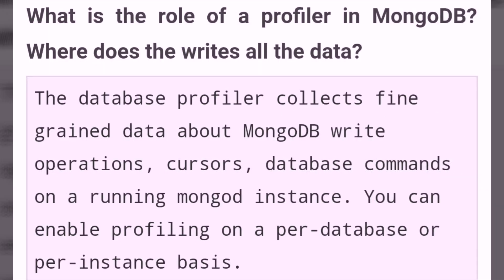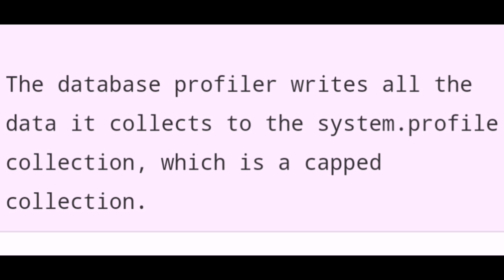What is the role of a profiler in MongoDB, and where does it write all the data? The database profiler collects fine-grained data about MongoDB write operations, cursors, and database commands on a running MongoDB instance. You can enable profiling on a per-database or per-instance basis. The database profiler writes all the data it collects to the system.profile collection, which is a capped collection.